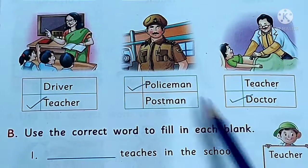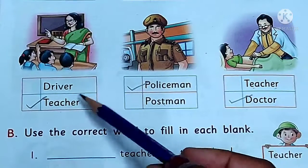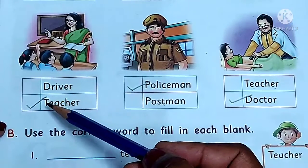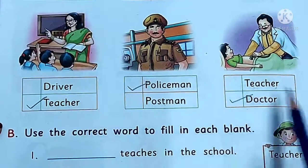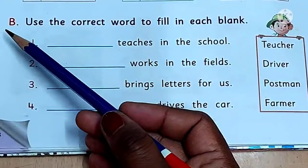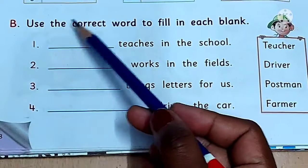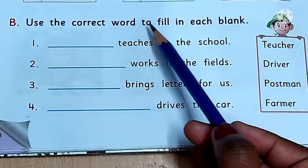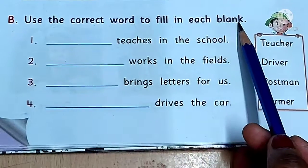So like this, you will put a tick before the correct name. Okay? Now see exercise B. Use the correct word to fill in each blank.